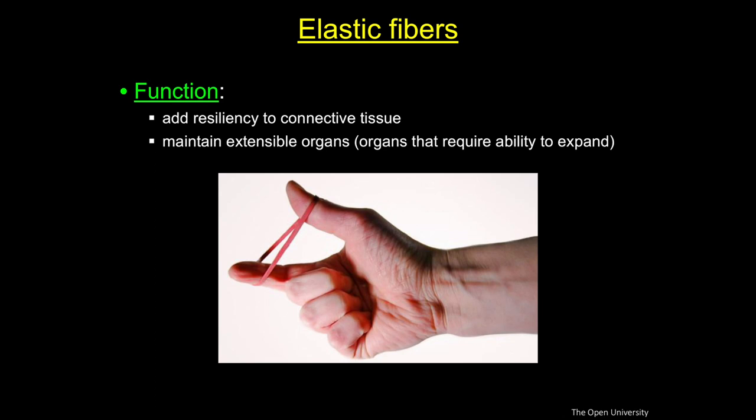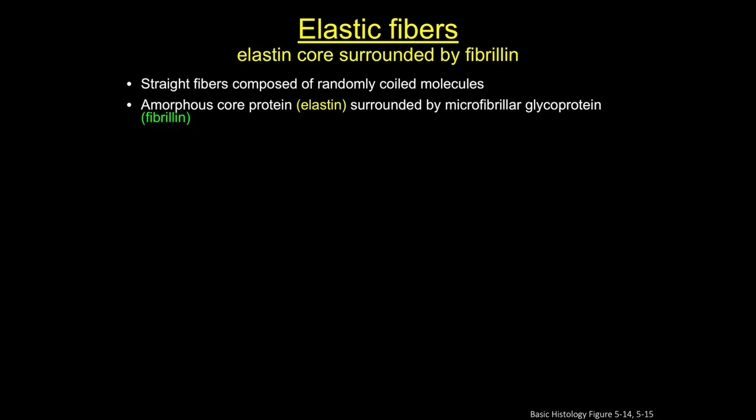Elastic fibers, as the name implies, have properties similar to rubber, allowing tissues to be stretched or distended, and then snapping back to their original state when relaxed — much like a rubber band. Their function is to add resiliency to connective tissue and maintain the ability of extensible organs to expand and contract, as in the trachea or arteries. Elastic fibers are composed of fibrillin microfibrils embedded in a larger mass of cross-linked elastin, secreted by fibroblasts and smooth muscle cells in the vascular walls.